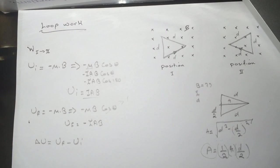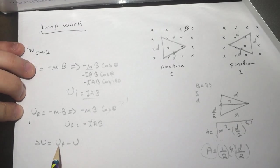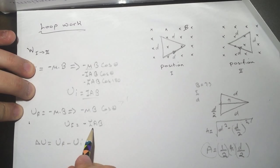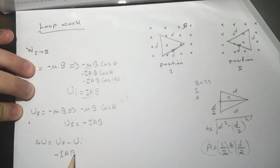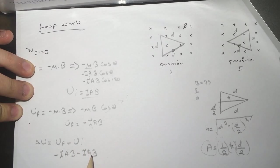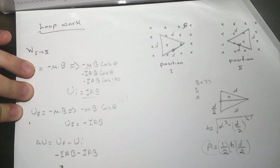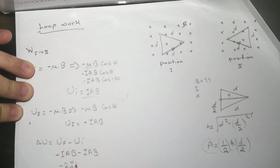U final is minus IAB, and the initial is minus IAB. So we're going to add them. It's minus 2IAB, which is the work done.